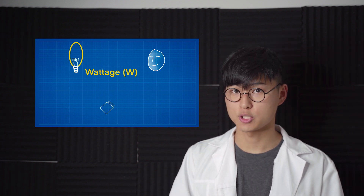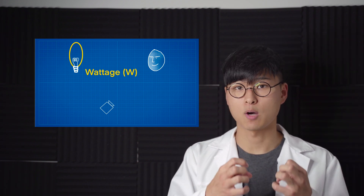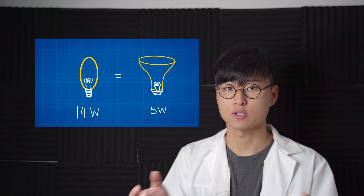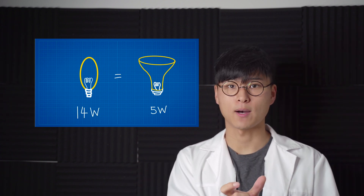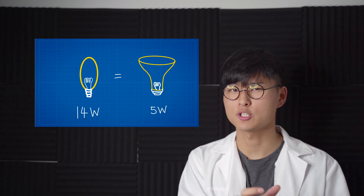When you look at a light bulb packet, the first thing you'll see is the wattage. This is exactly how much power the light bulb draws from your power socket. More efficient bulbs can produce the same amount of light using less power, so sometimes the wattage has nothing to do with the brightness.